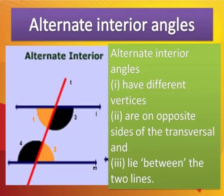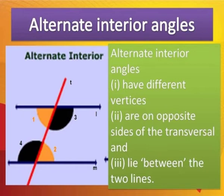Alternate interior angles have different vertices, lie on opposite sides of the transversal, and lie between the two lines. In each transversal there are two pairs of alternate interior angles. In this figure, angle 1 and angle 2 are alternate interior angles since they have different vertices, lie on opposite sides of the transversal, and lie interior to lines L and M. Another pair is angle 3 and angle 4.